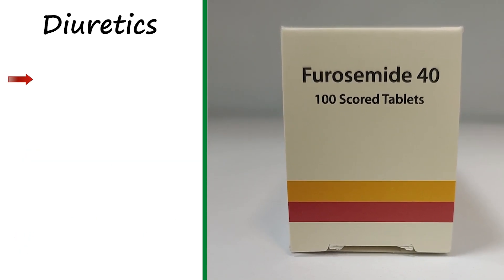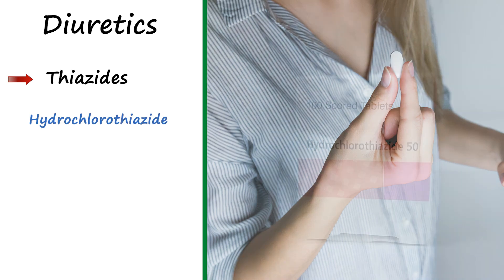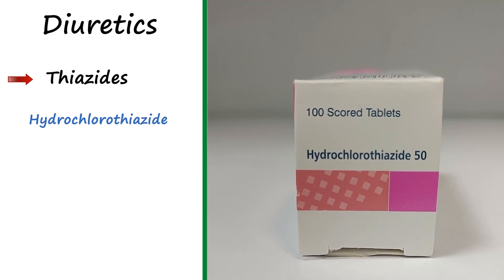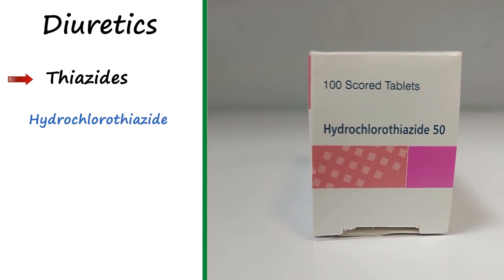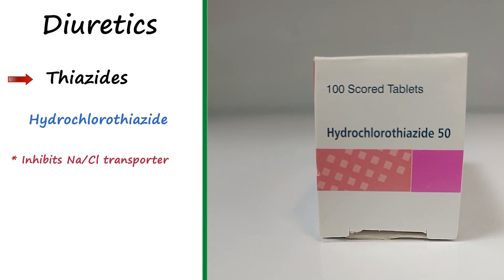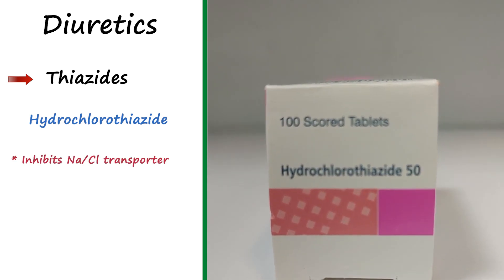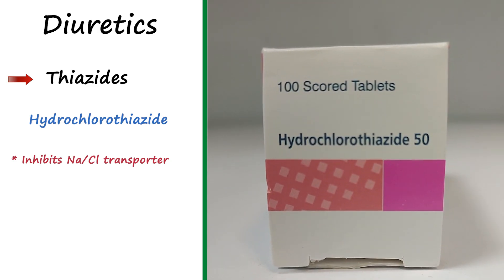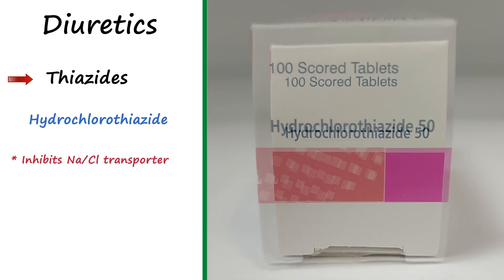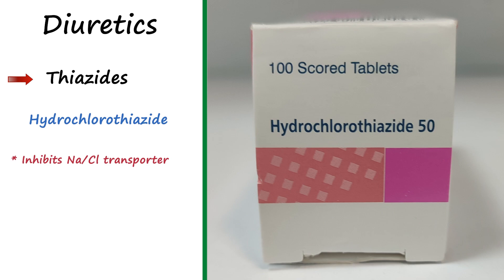The third class is thiazides. Hydrochlorothiazide is the prototype in this class. The main action of thiazides is to inhibit sodium-chloride transport in the early part of the distal convoluted tubule. When this happens, sodium and chloride can no longer enter the cells and will be excreted in the urine. The low level of sodium in the cell promotes sodium-calcium exchange at the basolateral membrane, increasing reabsorption of calcium from urine, which can lead to hypercalcemia.